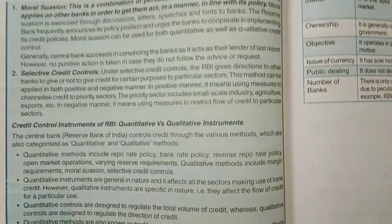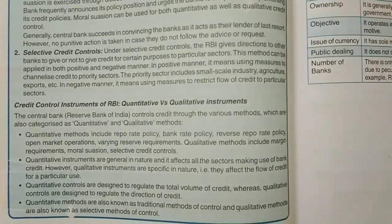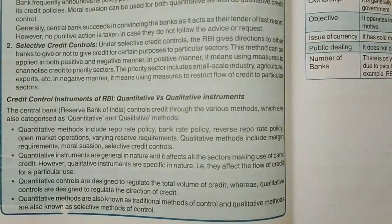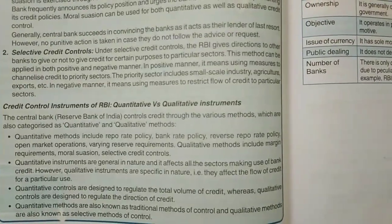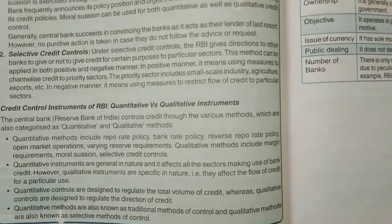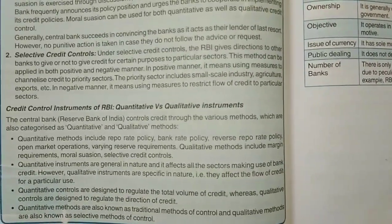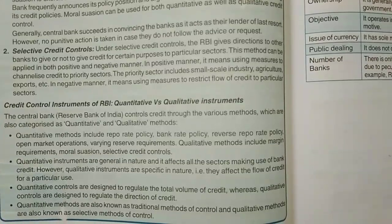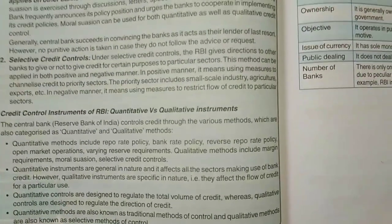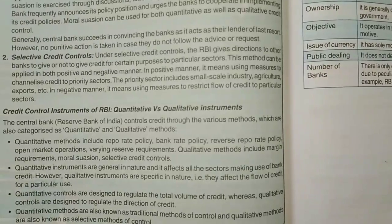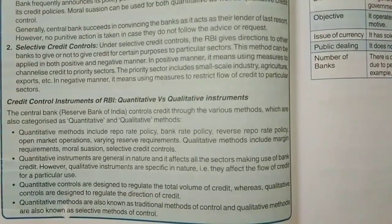There are two kinds of credit control instruments: quantitative and qualitative. Quantitative instruments include repo rate, bank rate, reverse repo rate, open market operations, and varying reserve requirements. Qualitative methods include margin requirements, moral suasion, and selective credit controls. So quantitative methods were what we studied earlier — repo rate, bank rate, reserve rate, and reserve requirements — whereas qualitative includes margin requirements, moral suasion, and selective credit control.